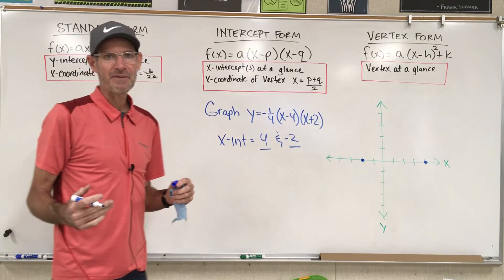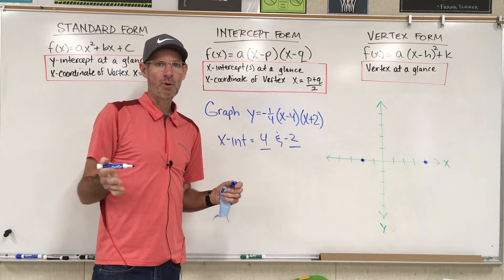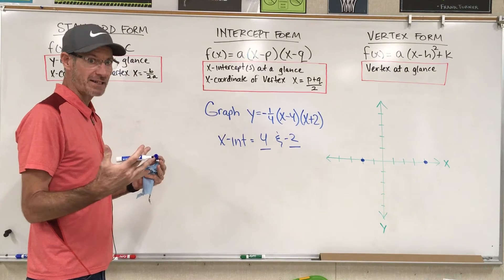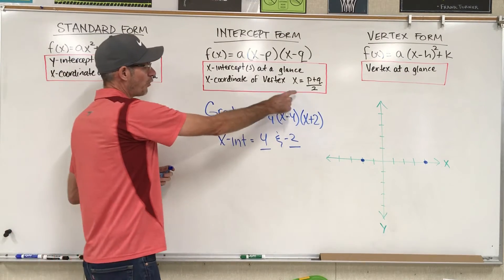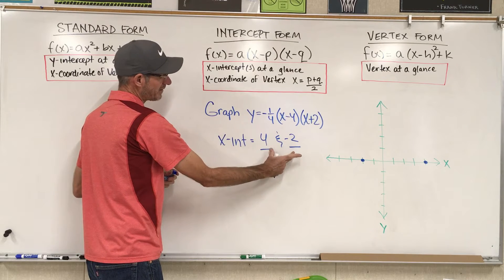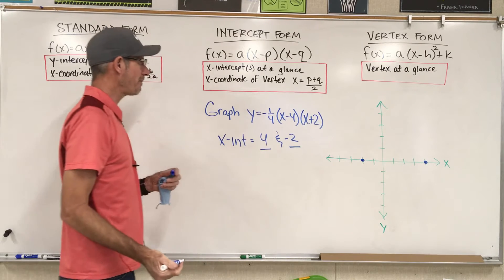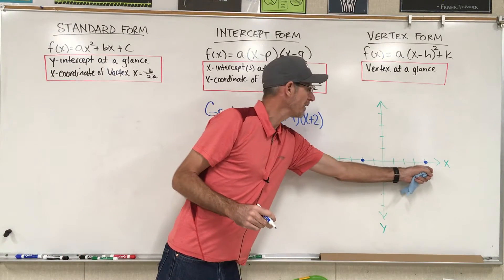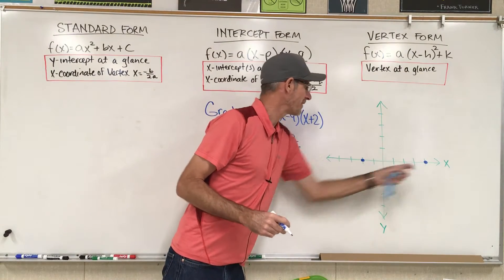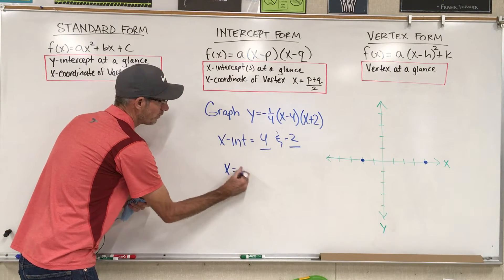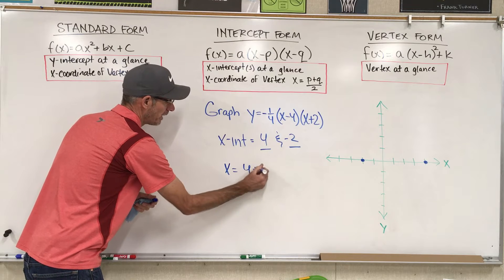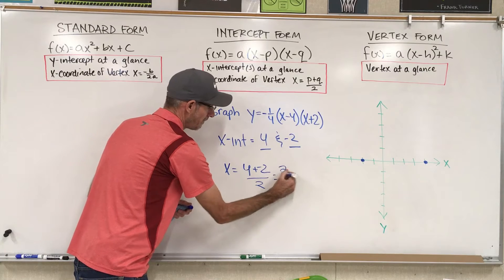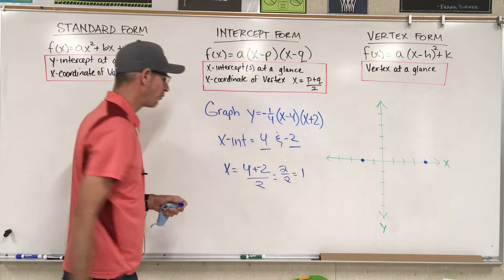Now in order to graph this, I'm going to need to find at least one more point on my graph, and that point is going to be my vertex. So I'm going to use this formula — I'm going to take my two x-intercepts and add them up and divide by 2. That will tell me the exact midpoint between the two x-intercepts. So x equals 4 plus negative 2 divided by 2, which is 2 over 2, so that equals 1.